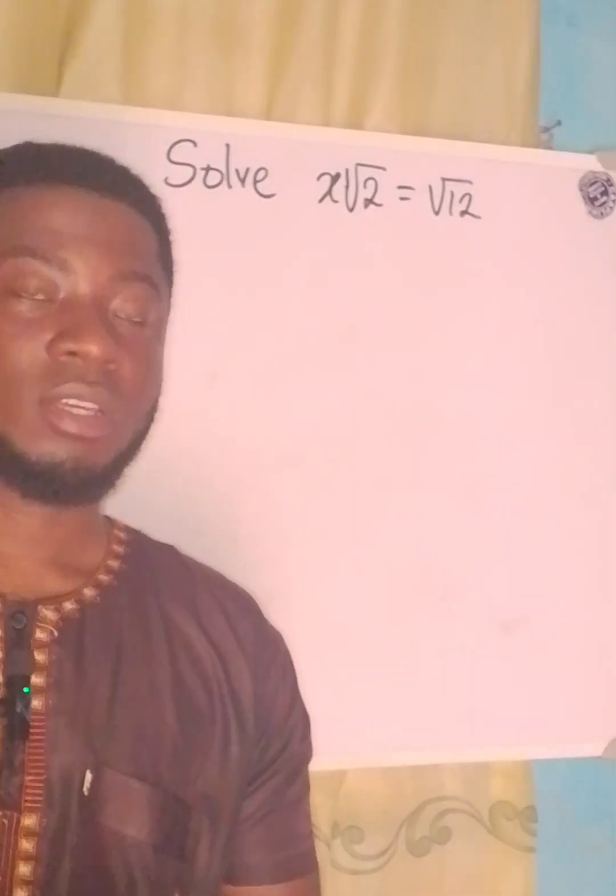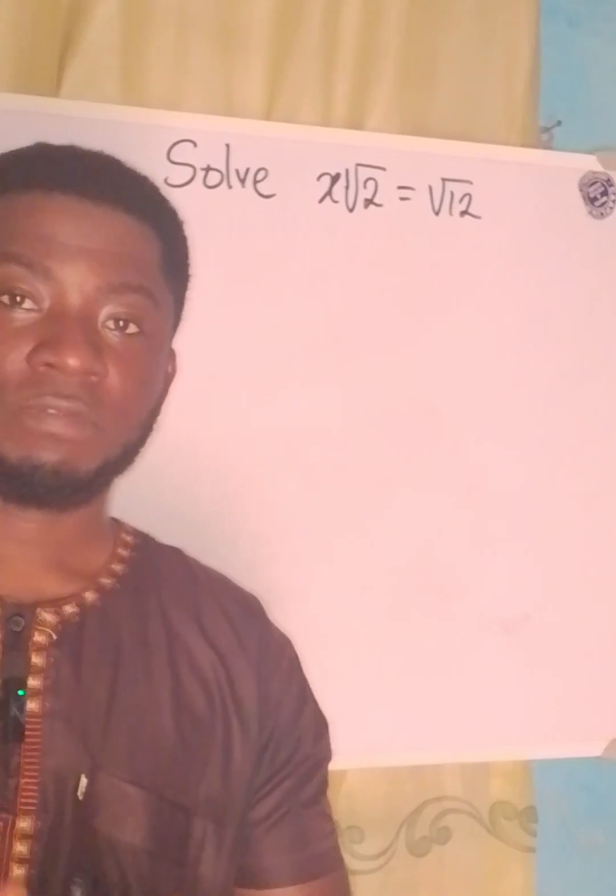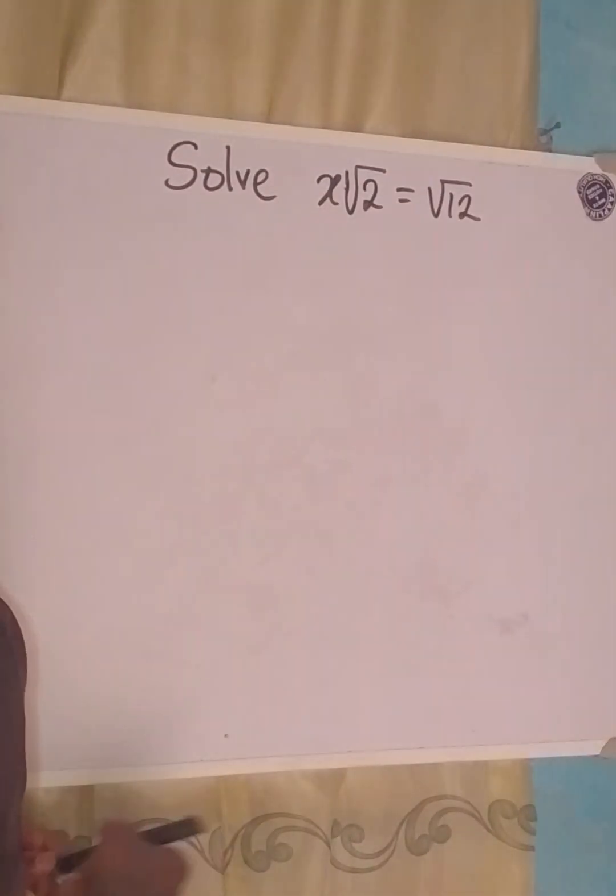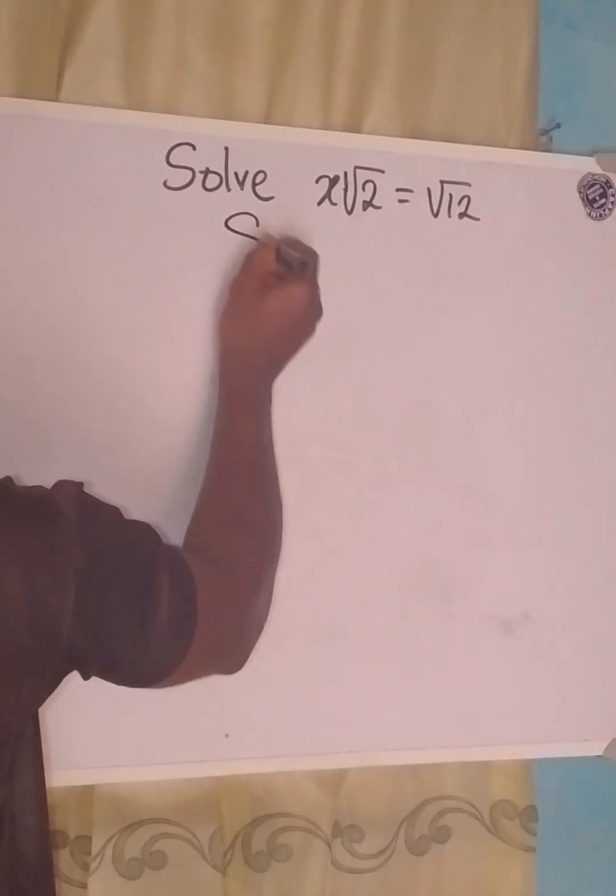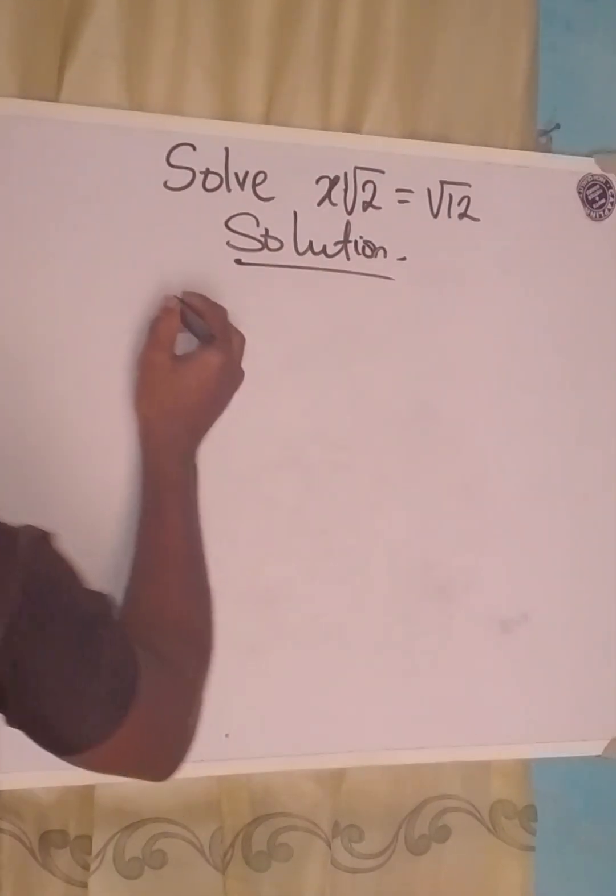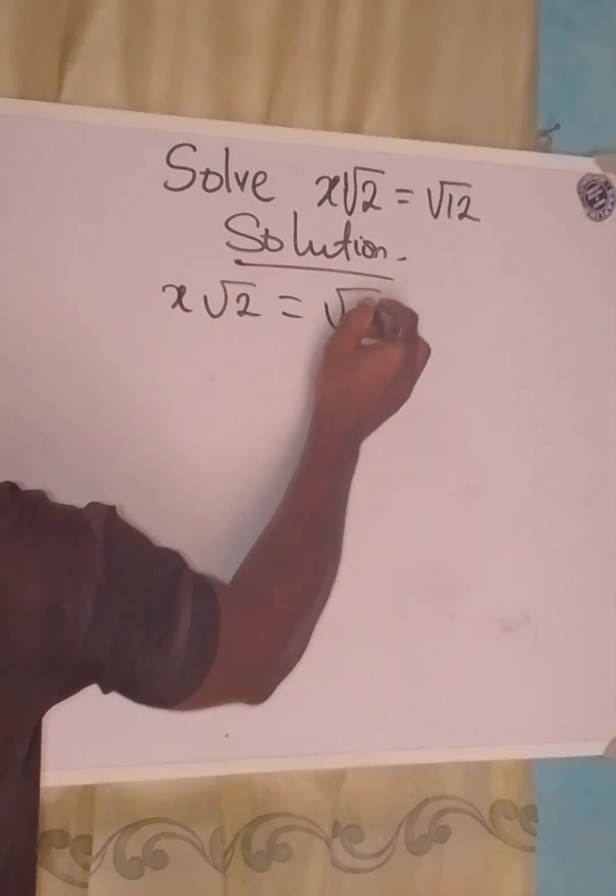Hello everyone, let's provide a solution to the problem on the board very quickly. Okay, solution. So we have x√2 = √12.